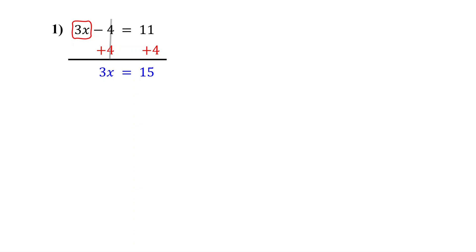The second step is to isolate the variable itself — remember, that's our main goal. Notice that x is being multiplied by 3. So to get x by itself, we do the opposite of multiplication: we divide by 3, and we divide both sides to keep our equation balanced. On the left, 3 divided by 3 is 1, so the 3s cancel out, leaving x by itself. On the right, 15 divided by 3 is 5. So the solution to this equation is x equals 5.